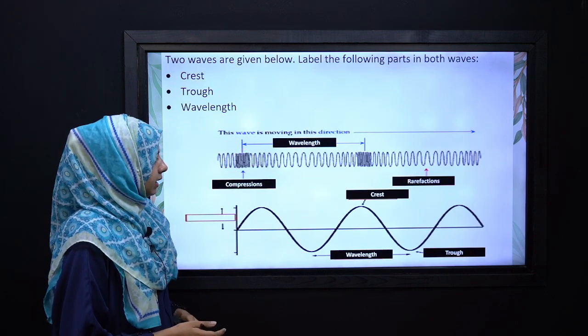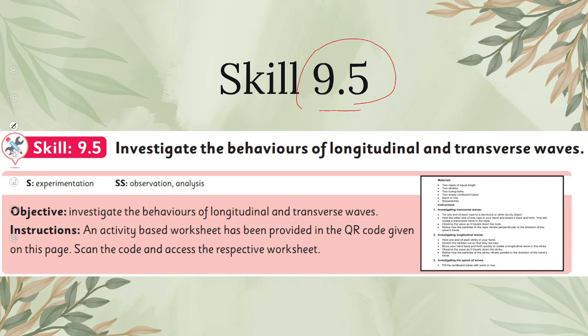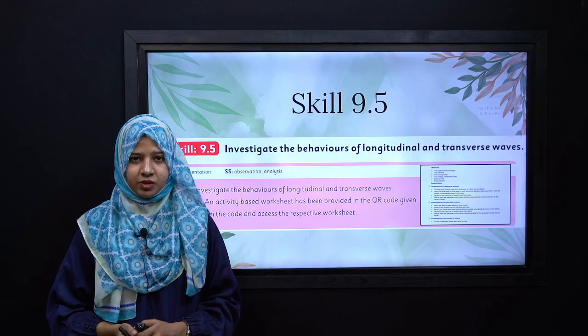Next, we move to our next skill, that is skill 9.5. To solve this skill, we will investigate the behavior of longitudinal and transverse waves, and through some experiments we will understand it in a better way.